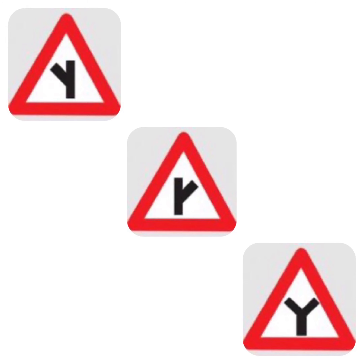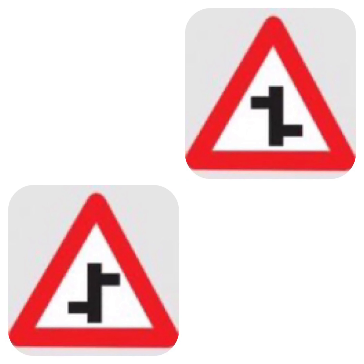Y intersection: there is a Y-shaped formation ahead — it depicts the actual formation of the road. Staggered intersection: this sign is placed where there are left and right turns available on the straight road, having a tiny distance between them. It is an intersection which does not allow crossing of the road.